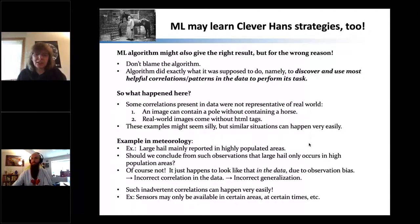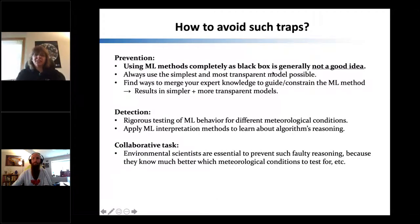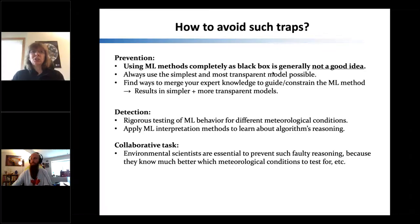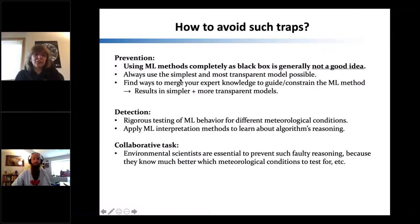Sensors may only be available in certain areas at certain times, which can lead to correlations in the data not representative of the real world. To avoid this, you should never use machine learning methods completely as a black box. You want the neural network to pick up patterns you didn't know about, but it may also pick up faulty strategies. Always use the simplest and most transparent model possible, and find ways to merge expert knowledge to guide and constrain the machine learning methods.